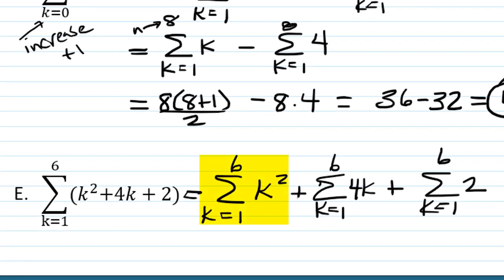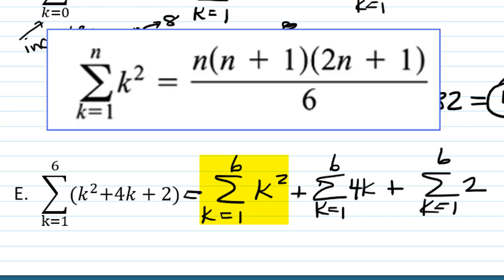All right, now this first sum has a k squared in it. You can't just take the sum of the k and square it. You have to actually apply a different rule. So the first n squares are going to add up to n times n plus 1 times 2n plus 1 over 6. n in this case is 6, so we're going to have 6 times 6 plus 1 times 2 times 6 plus 1, so 12 plus 1 over 6.